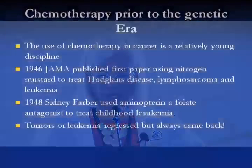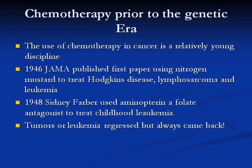The use of chemotherapy is a relatively young discipline. In 1946, the Journal of the American Medical Association published the first paper using nitrogen mustard to treat Hodgkin's disease, lymphosarcoma, and leukemia. In 1948, Sidney Farber first used aminopterin, a folate antagonist, to treat childhood leukemia.